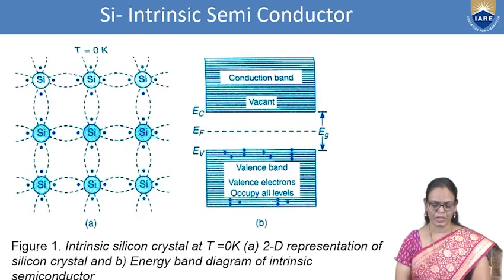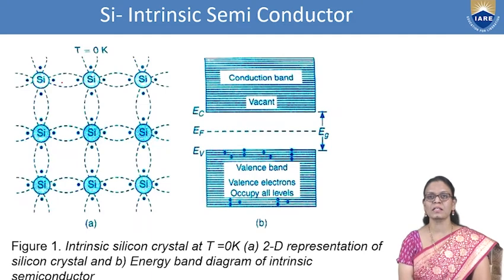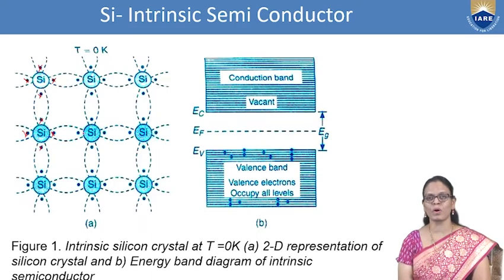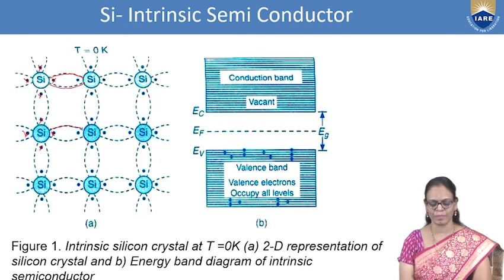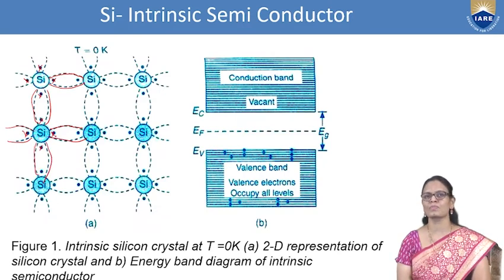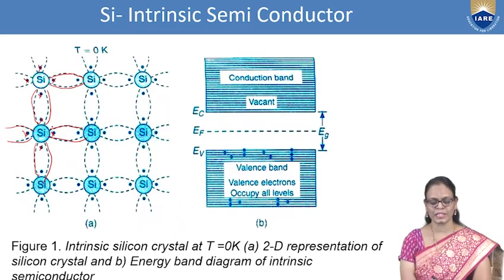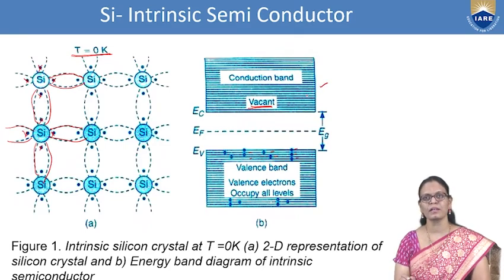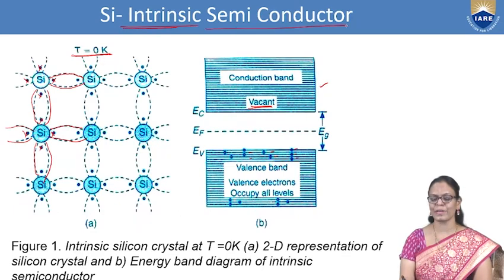This is the silicon crystal we are talking about — each silicon atom has four valence electrons. These four electrons form covalent bonds with their neighboring atoms, so all four will be bonded. At zero Kelvin, all electrons are bound and not free; the valence band is completely full and the conduction band is vacant. So at zero Kelvin, the intrinsic semiconductor does not conduct and behaves as an insulator.